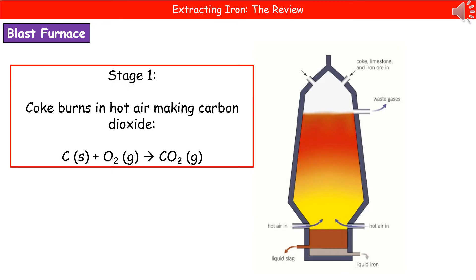The first stage is where we're going to have our coke burning in hot air to make carbon dioxide. I've given you the balanced symbol equation there. We start off with our carbon, which is our coke, and we add oxygen to it. Remember, oxygen always goes around as a diatomic molecule, O2, and we make carbon dioxide, CO2.